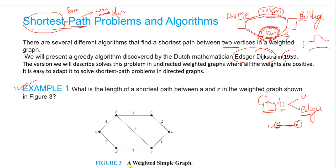Now see example 1. I will explain it in the normal manner, not with the help of the algorithm — the algorithm example will be in the next session. An algorithm is a step-by-step procedure. This is a weighted simple graph with vertices a, b, c, d, e, and z — that is 5 vertices total.